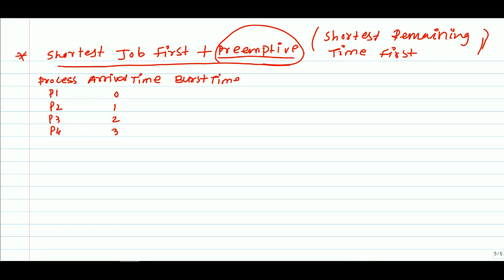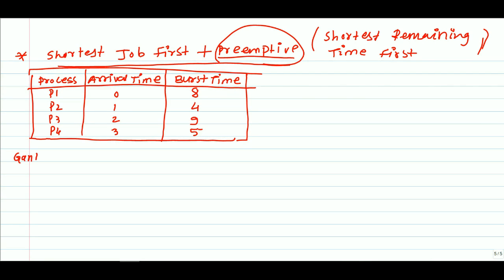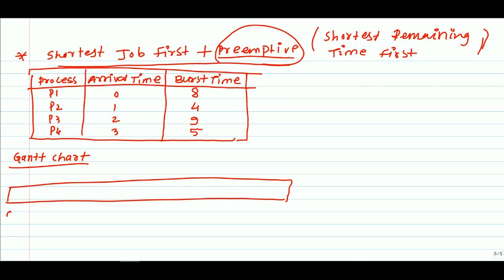Burst time is a very important parameter in the Shortest Job First scheduling algorithm, because from this parameter we decide which process to execute first. Now we'll draw a Gantt chart for this.